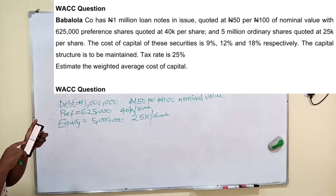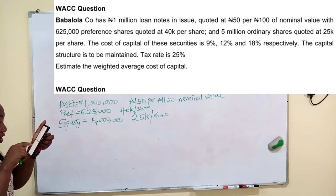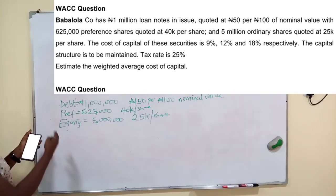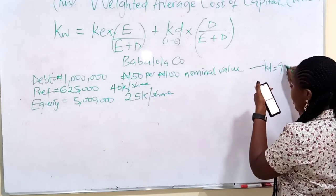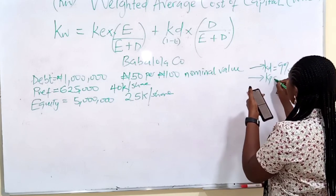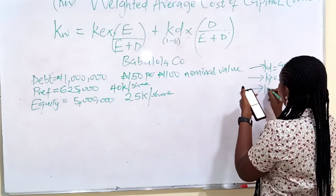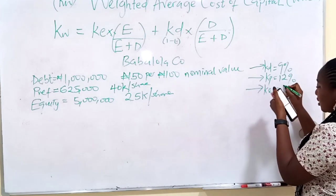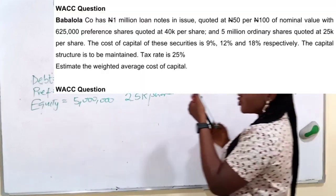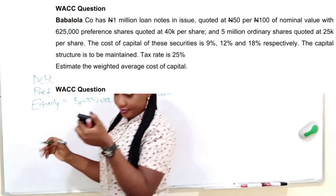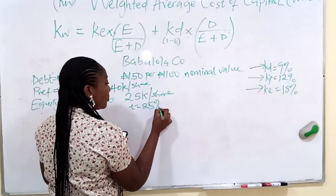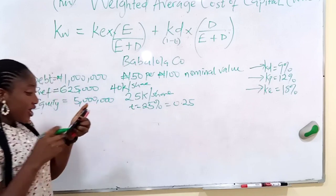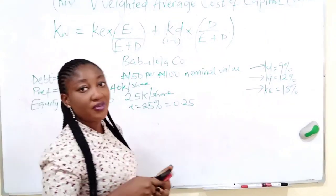They said the cost of capital of those securities are 9%, 12%, and 18% respectively. So KD is 9%, KP is 12%, and KE is 18%. The capital structure is to be maintained. Tax rate is 25%. Estimate the weighted average cost of capital.